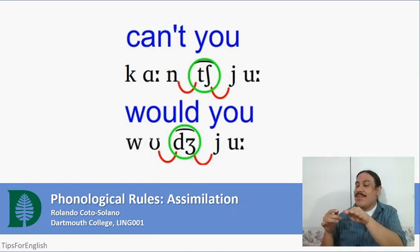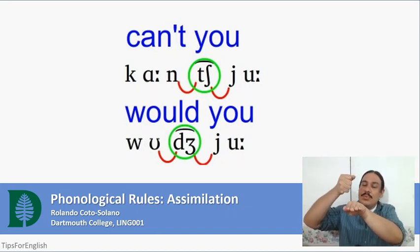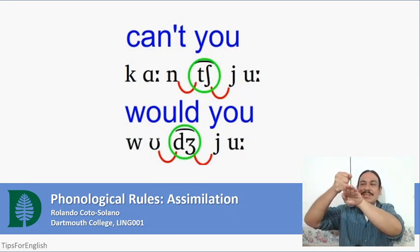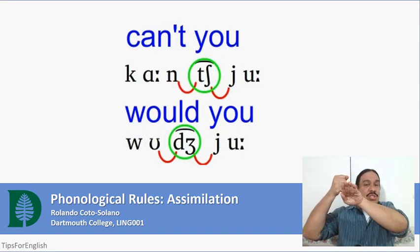Likewise, if you have an alveolar D followed by a palatal sound, the palatal sound would pull your tongue further back, closer to the palatal. And now your tongue would not be in the alveolar position, but in the post-alveolar one. And you would get the word wudch.